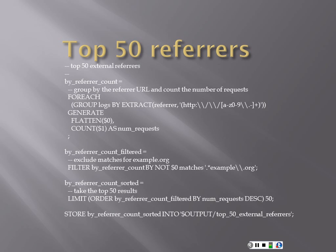Then referrers — we always want to know who sent someone our way, especially with S3 buckets that are fairly private. The top 50: if we have external referrers like Google or Bing, then we set our buckets up wrong, but we can extract and figure out who's referring to that particular data chunk. It extracts by HTTP and validates that this is a valid .com, .net, or .org address using a standard regular expression for URL validation. Then we flatten, count, and limit to top 50 results.